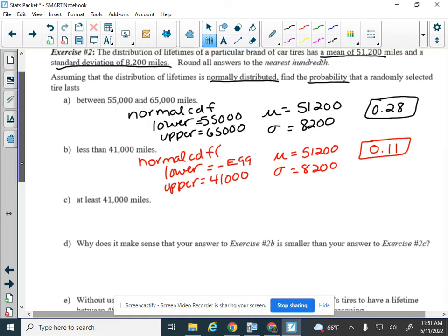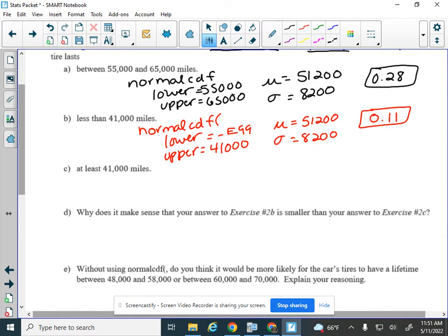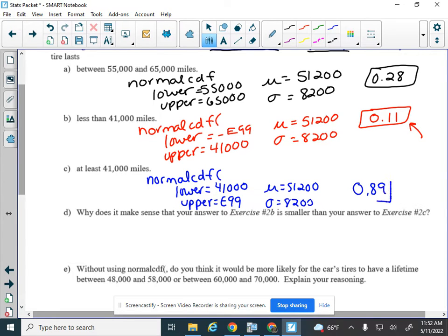The last one, we want at least 41,000 miles. Now, just a little trick here. I've already done the other side for less than 41,000 miles, which was about 11%. So I'm expecting the opposite, or the complement, 89% for this one, but we'll still go through those steps. So normal CDF. Lower, upper. We want at least 41,000, so the lowest we want is 41,000. And we're going to go up to positive infinity. And if I did take this one in, I would get to the nearest hundredth, the 0.89.